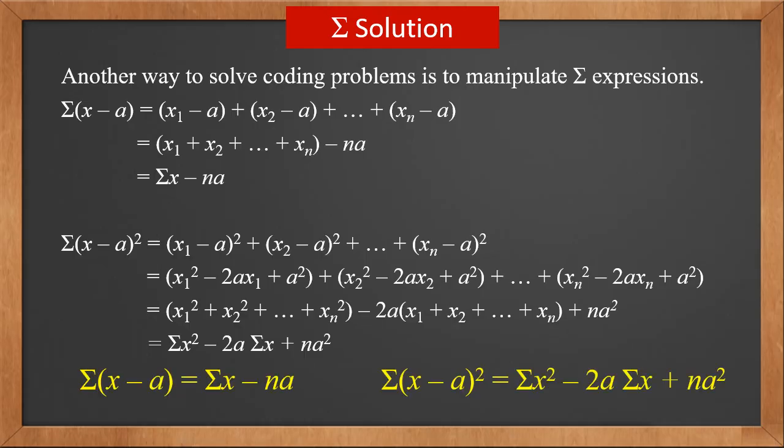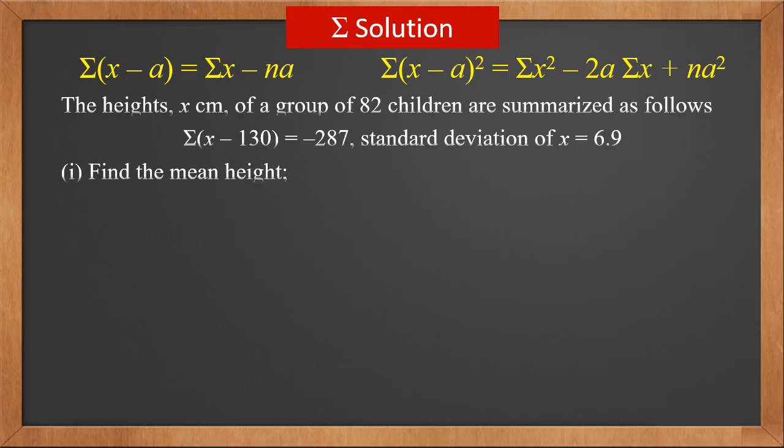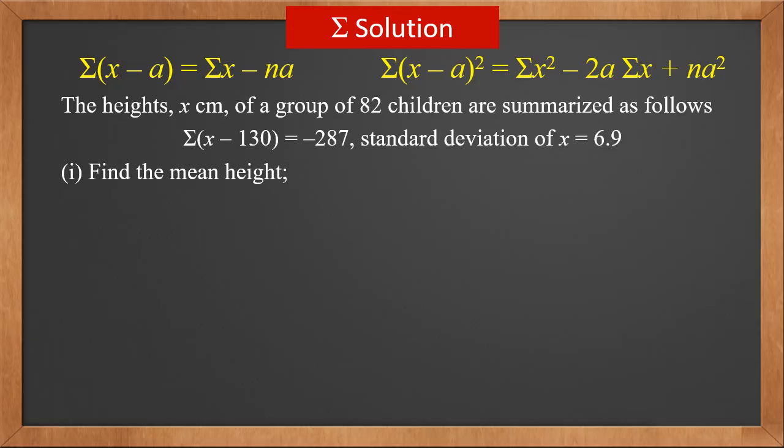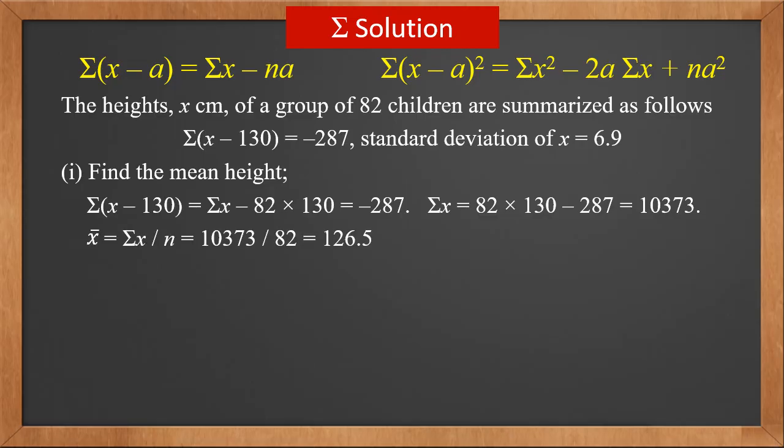These are the two sigma properties. Using the two sigma properties, let's solve the same problem again. Using the first property, we know sigma x minus 130 is sigma x, minus 82 times 130, and it is minus 287. Therefore, sigma x is 82 times 130 minus 287, which is 10,373. The mean x bar is sigma x over n. So it is 126.3. We get the same answer.